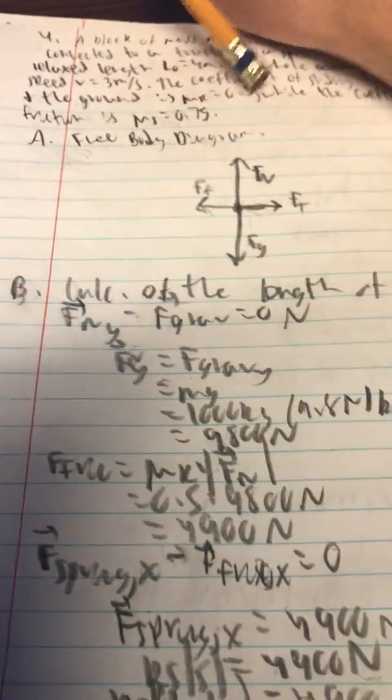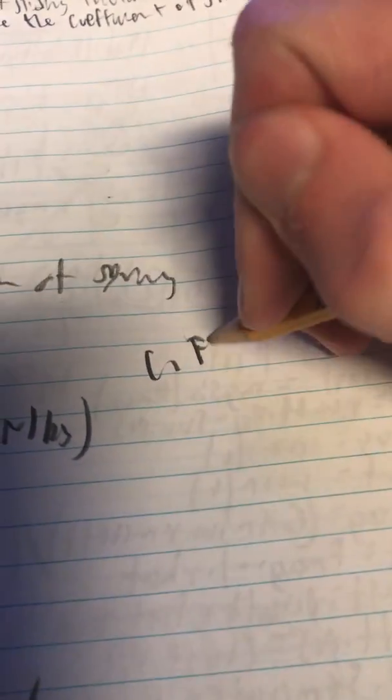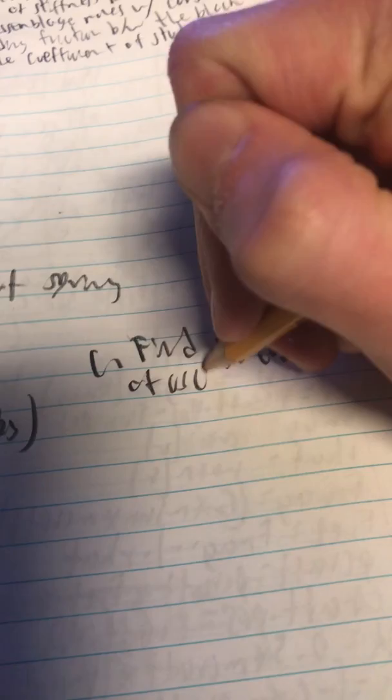So the length of the spring is 5 meters. And on part C, we actually are asked to find the period of oscillation for the spring.